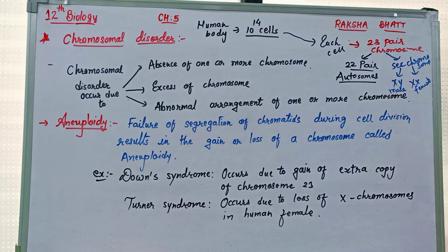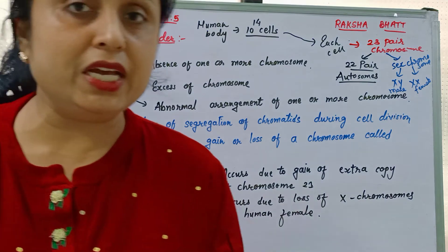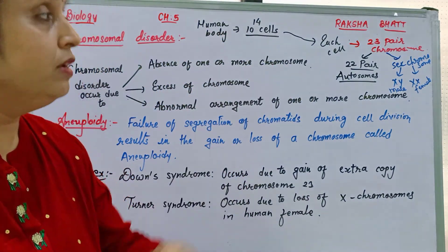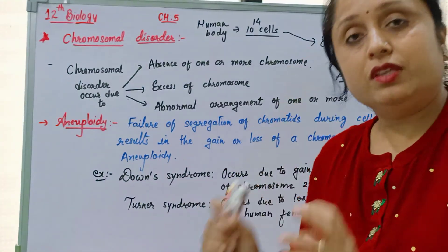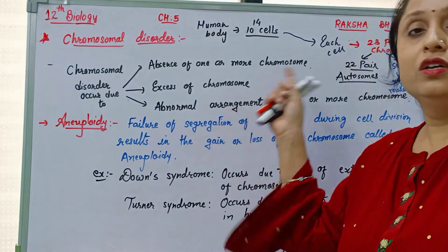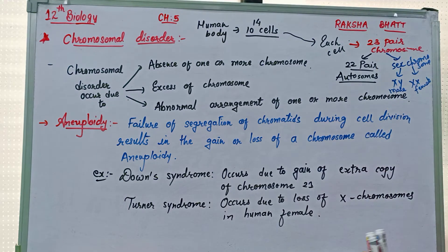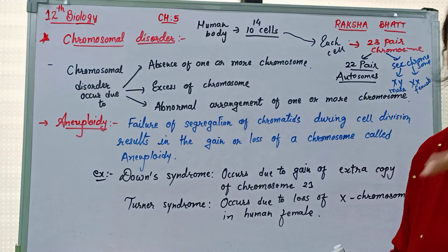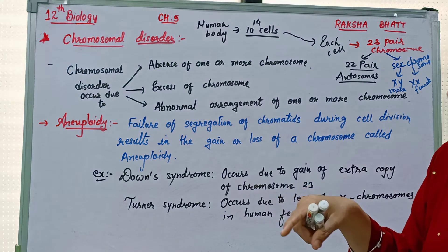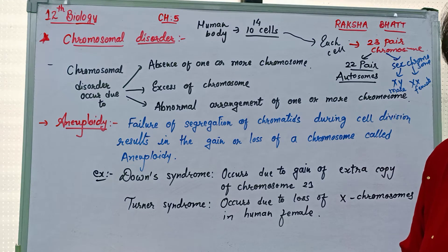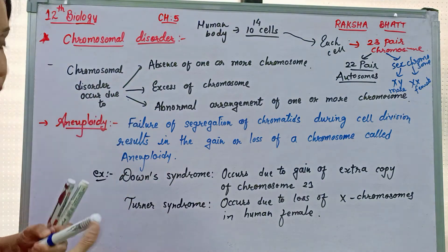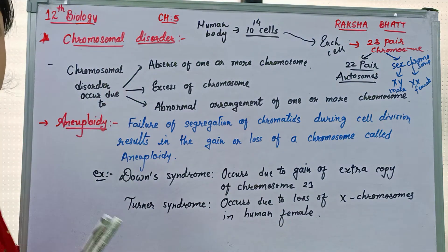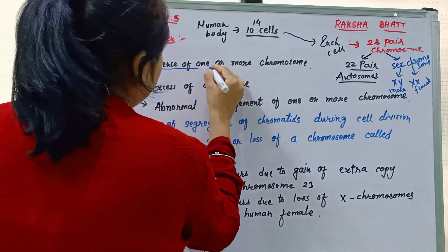Our body is made up of 10^14 cells, each having 23 pairs of chromosomes. Out of 23 pairs, 22 pairs are autosomes, and the 23rd pair are sex chromosomes. Chromosomal disorder occurs due to absence of one or more chromosomes, or presence of extra chromosomes.